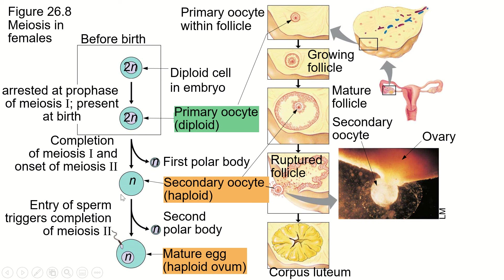Then that secondary oocyte is going to go, and if it gets fertilized, it will then complete meiosis 2. When it does that, it's going to eject the second nucleus and create a second polar body. All of the cytoplasm from this first primary oocyte remains in this mature egg that's finished meiosis 2.